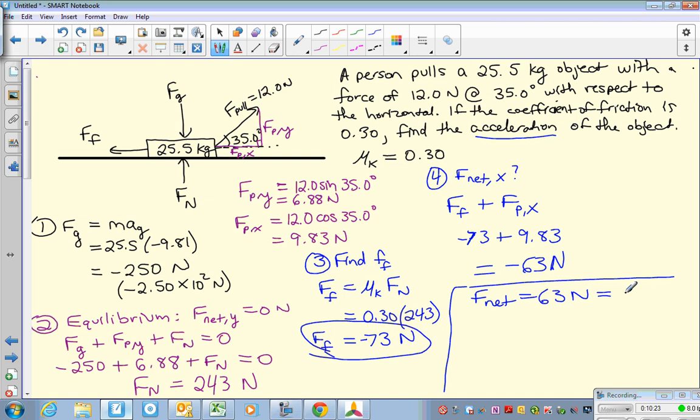Acceleration, this equals mass times acceleration. All you have to do is plug in your mass and divide by mass. So you get 63 equals 25.5 times acceleration. You guys can divide that to find acceleration.